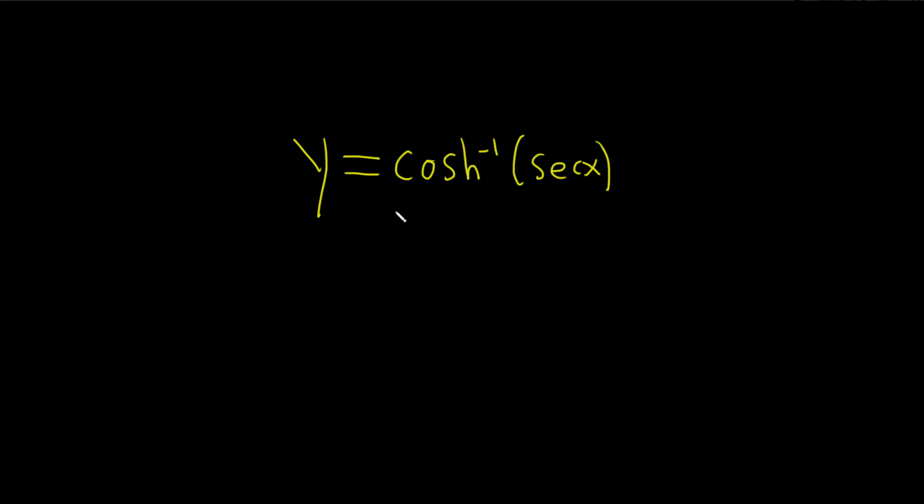Hi everyone, in this problem we're being asked to find the derivative. So the formula we're going to need is the formula for the derivative with respect to x of the inverse hyperbolic cosine of x.